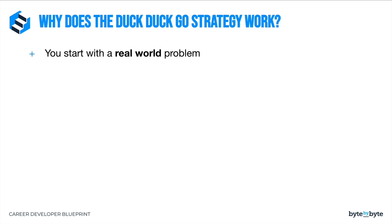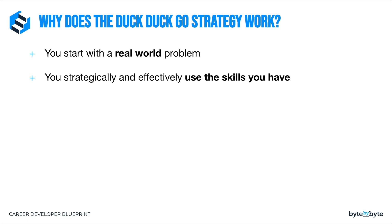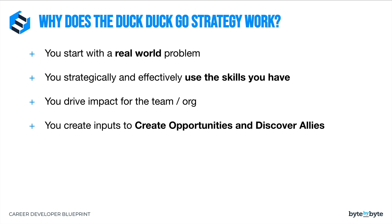Why does the DuckDuckGo strategy work so well? You're starting with a real-world problem — something that people are actually struggling with. One of the classic mistakes people make in business is building a product because it sounds cool, and then no one actually buys it. That happens because they started with the solution, not the problem. Here, because we start with the problem, we know that solving it would make people's lives better. Then we're strategically using our existing skills — there's not a huge lift. We create a large impact without learning lots of new stuff, and this drives impact for the team while creating inputs for opportunities and networking.